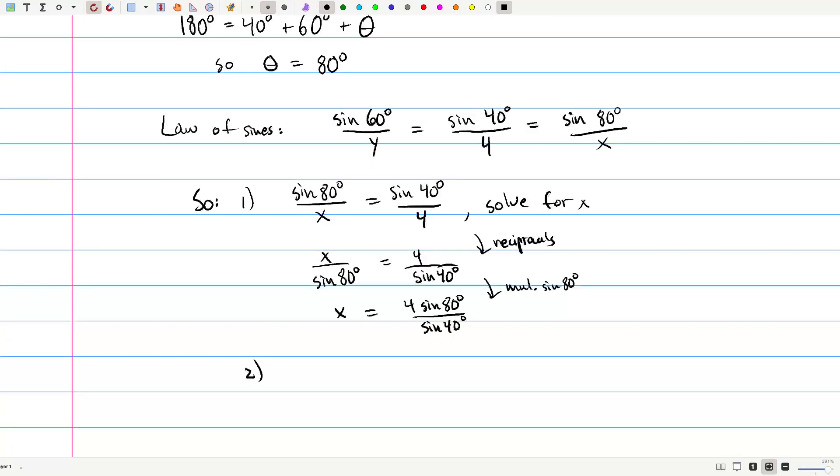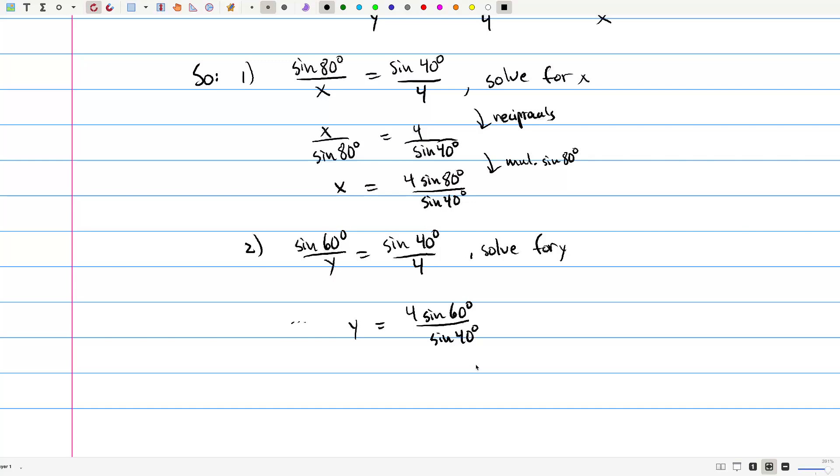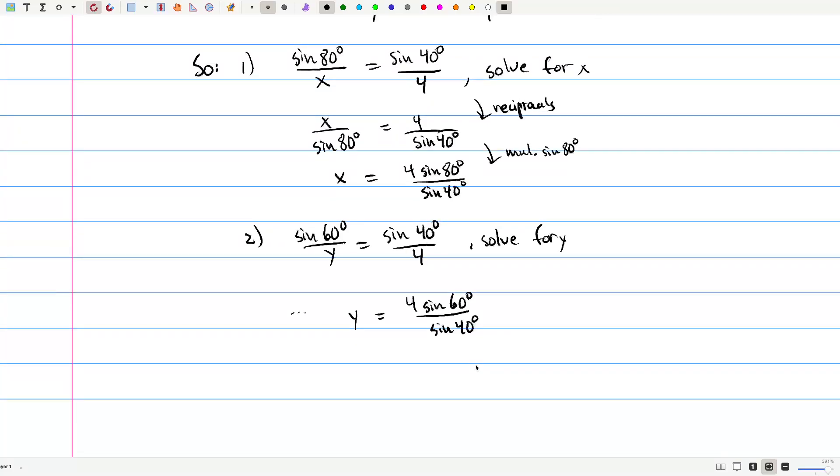And then we can take sine of 60 degrees over y equals sine of 40 degrees over 4. Solve for y. And using very similar steps, we get that y is equal to 4 sine 60 degrees over sine 40. Okay, so we know theta, we know x and y.